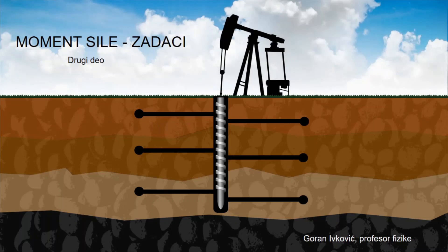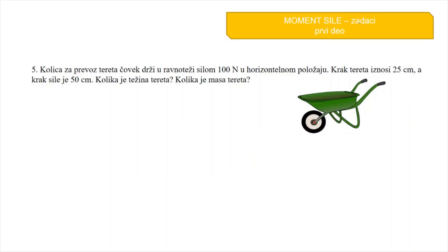Moment sile zadaci, 2. deo. Kolica za prevoz tereta. Čovjek drži u ravnoteži silom 100 N u horizontalnom položaju. Krak tereta iznosi 25 cm, a krak sile je 50 cm. Kolika je težina tereta?